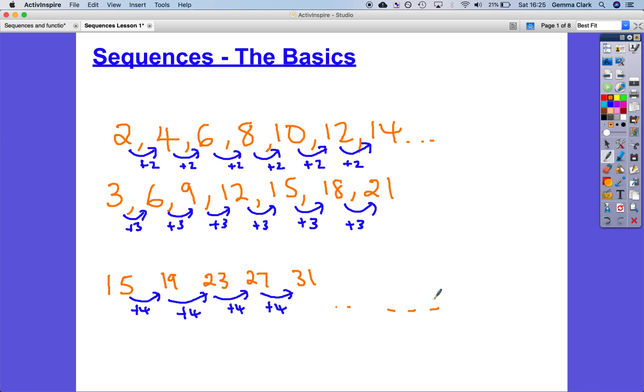So the key things, the key bits of terminology or vocabulary that we've encountered just now are term—these are the numbers in the sequence, terms are the numbers in the sequence—and also the term to term rule or sometimes called the term to term difference, and that's kind of self explanatory, how we go from one term to the next.